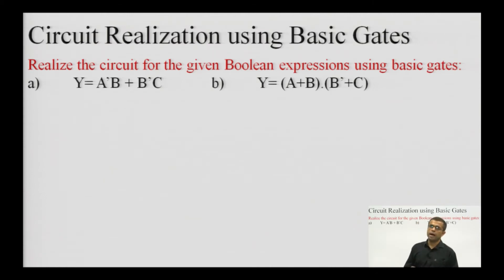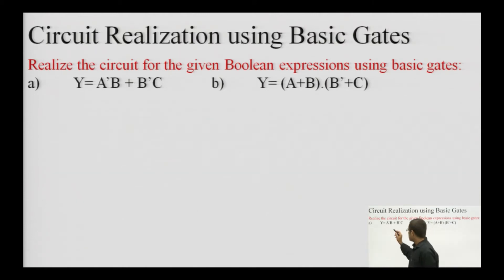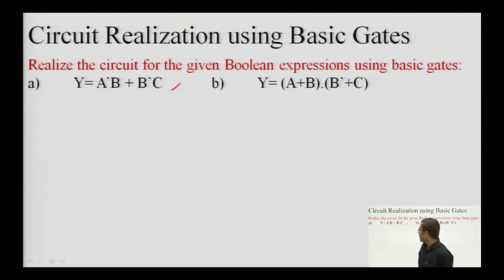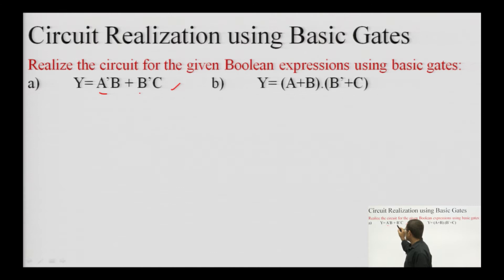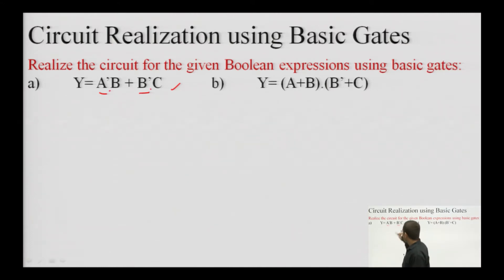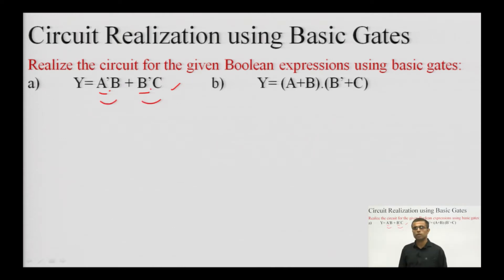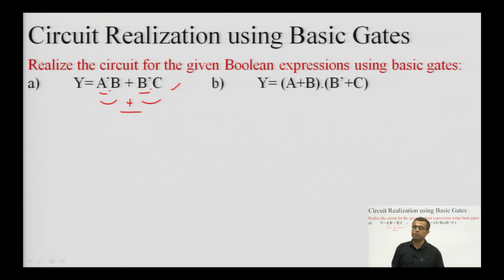Basic gates are three gates: AND gate, OR gate, and NOT gate. For any expression provided, if I am asked to realize a circuit, I first need to identify which gates are required. I can see that A has a bar and B has a bar, meaning I need NOT gates. The two variables are being multiplied, meaning I need two AND gates, and then these two products are to be added, meaning I need an OR gate. So two NOT gates, two AND gates, and one OR gate are required.